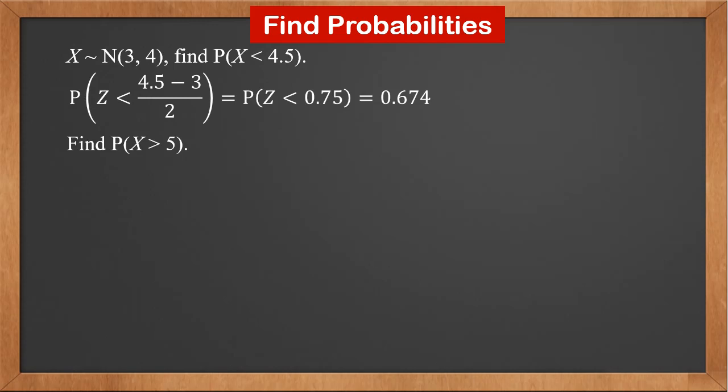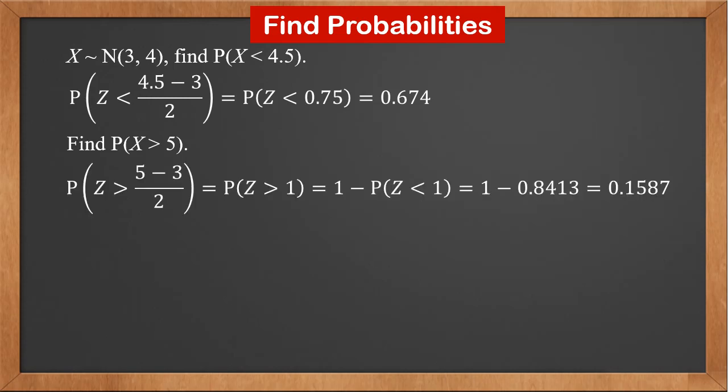Find P(X greater than 5). By standardizing it, we get P(Z greater than 5 minus 3 over 2), which is P(Z greater than 1). It is equal to 1 minus P(Z less than 1). By looking up the z-table, P(Z less than 1) is 0.8413. Therefore, the answer is 0.1587.